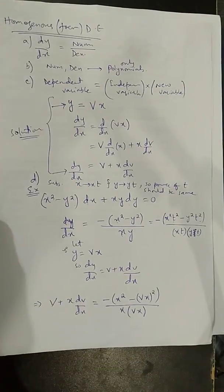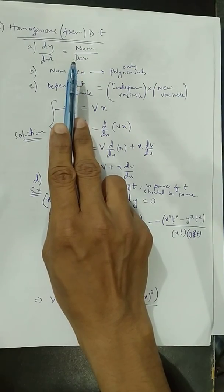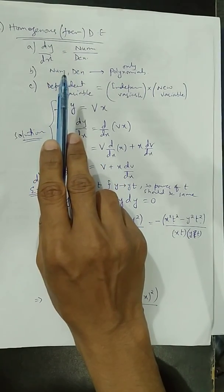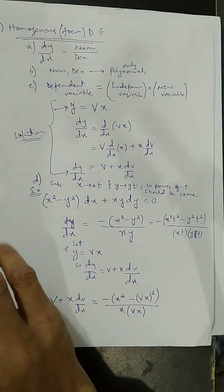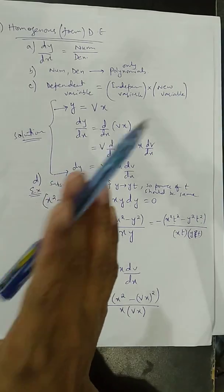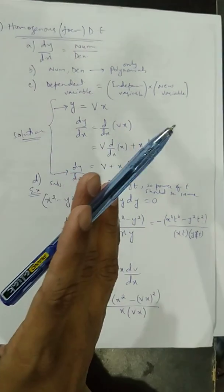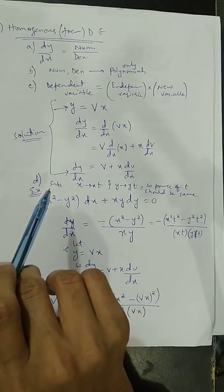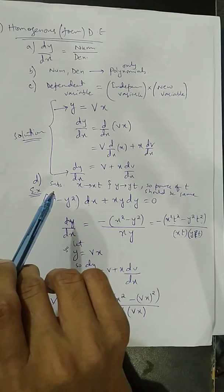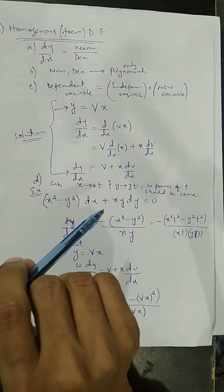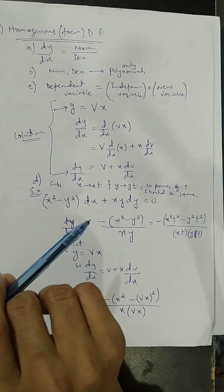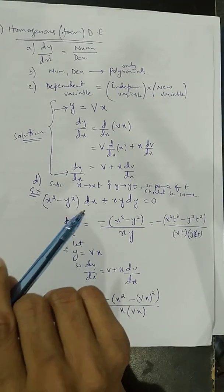The equation must be written in fractional form — that is, numerator divided by denominator. This was the first condition of being a homogeneous form. The second condition is that the numerator and denominator contain only polynomials — no exponential, logarithmic, trigonometric, or inverse trigonometric terms. The third condition: if you substitute x by xt and y by yt, the power of t must be the same — identical — in each and every term.